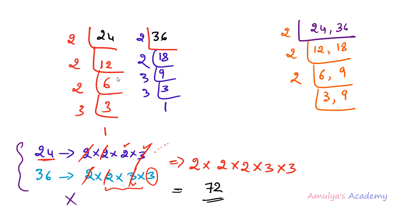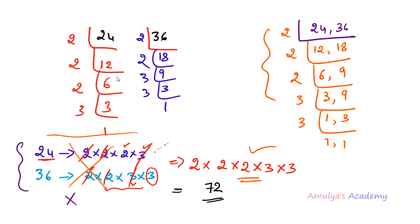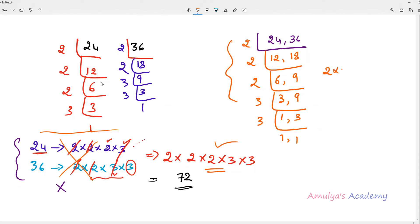Again checking divisibility by 2 — neither number is divisible, so I go for the next value, 3. Both numbers are divisible by 3, giving 1 and 3. Again 3 is divisible by 3, giving 1 and 1. When we get 1 and 1, the division is complete. The prime factors are 2 × 2 × 2 × 3 × 3, which gives 72 — we get the output without the separate comparison step. So multiplying 2 × 2 × 2 × 3 × 3 = 72.